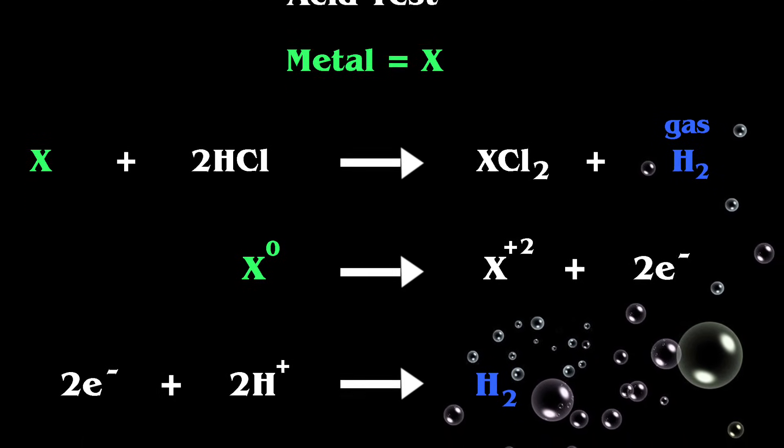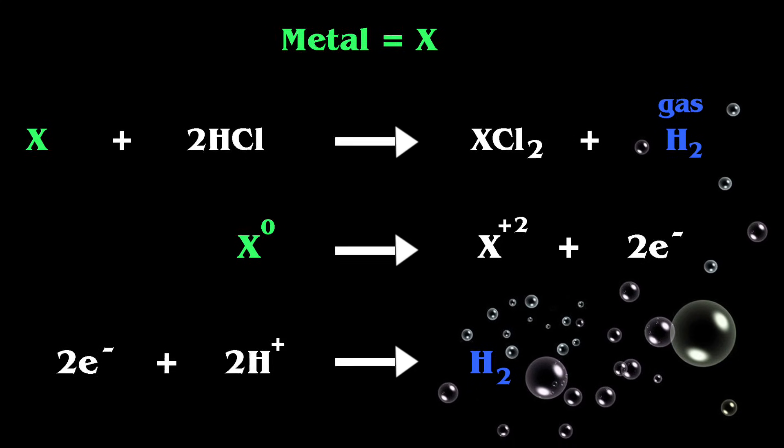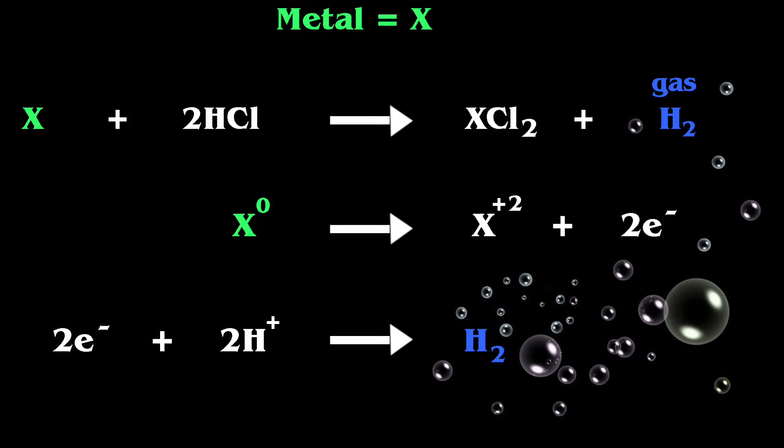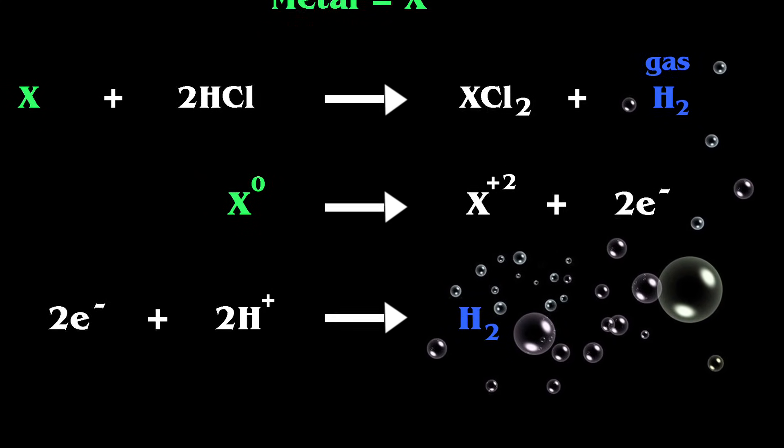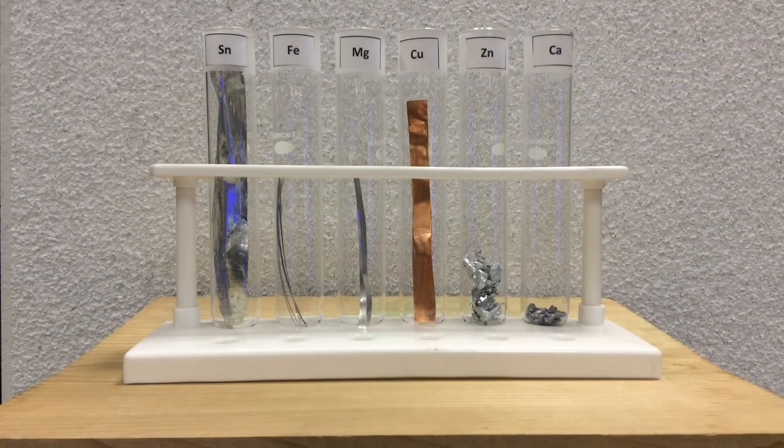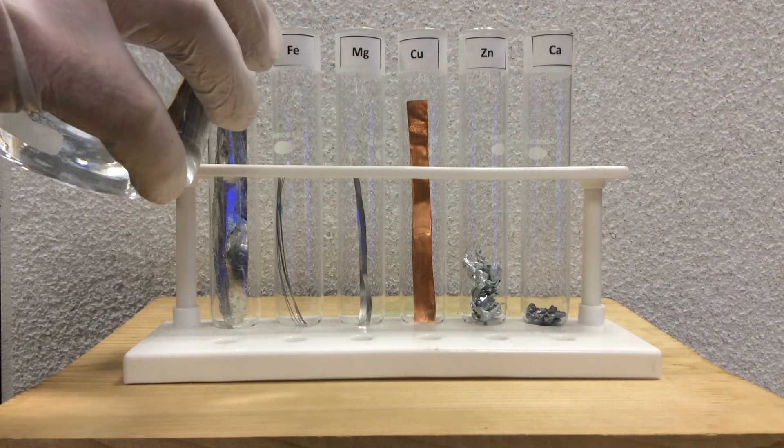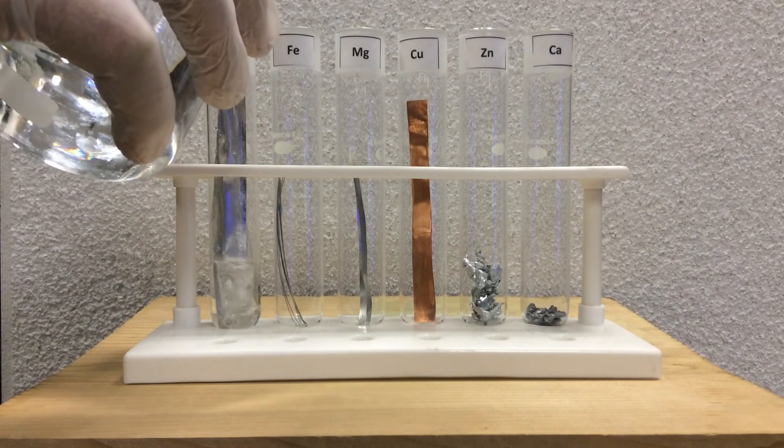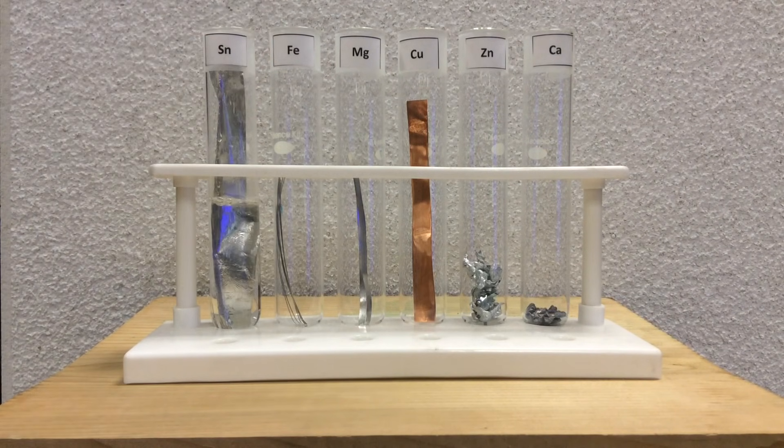As you can see in the half reactions, two electrons are going to be passed from the metal to the protons to make free elemental hydrogen gas. We're looking for observations to make here as I add the hydrochloric acid. And we're looking for bubbles.